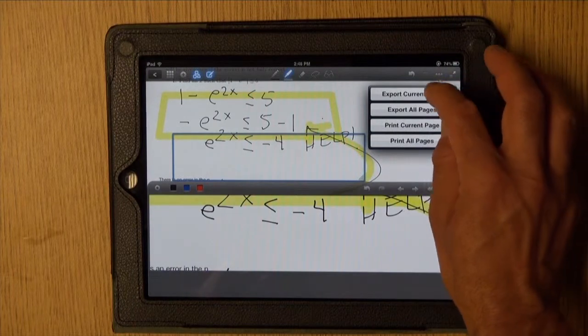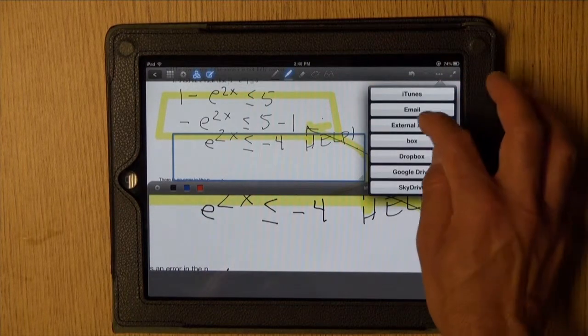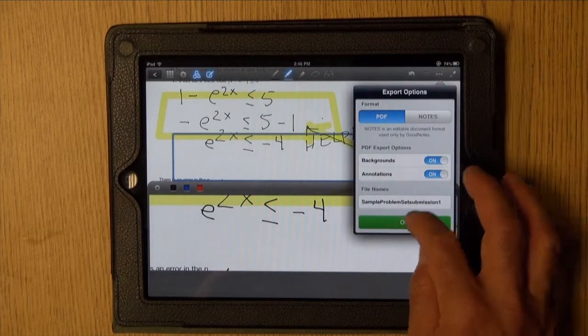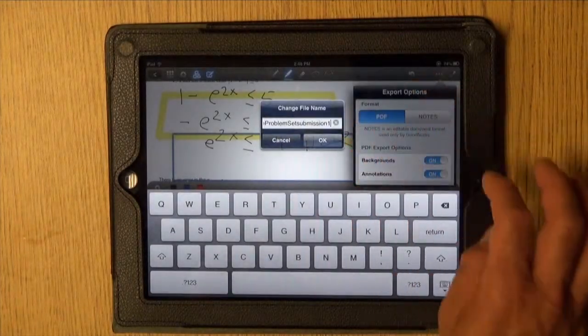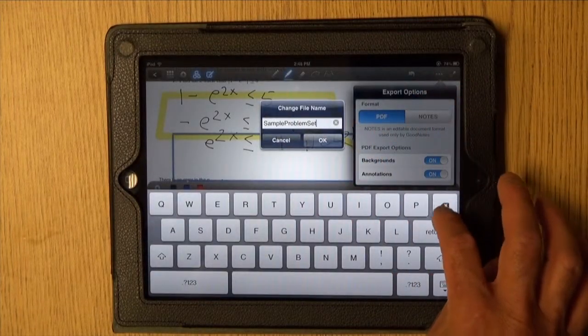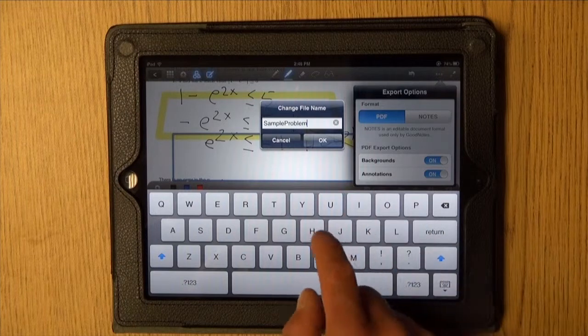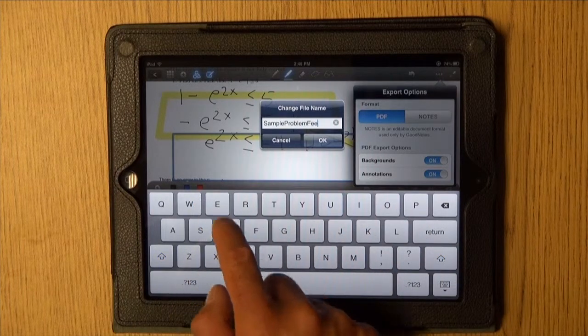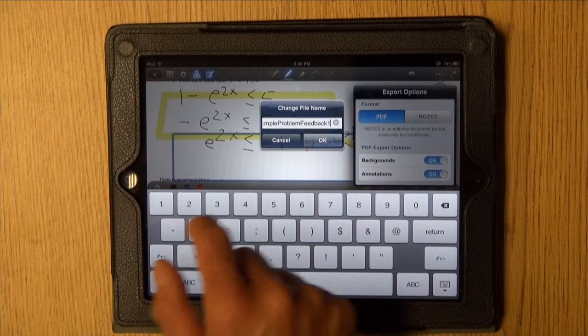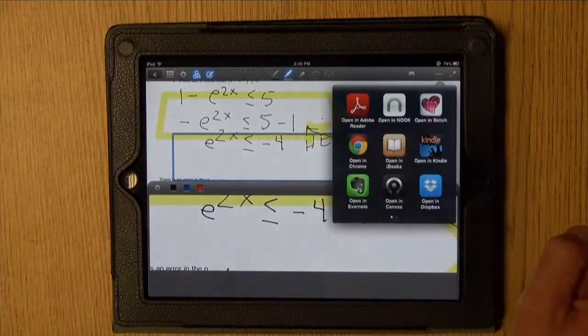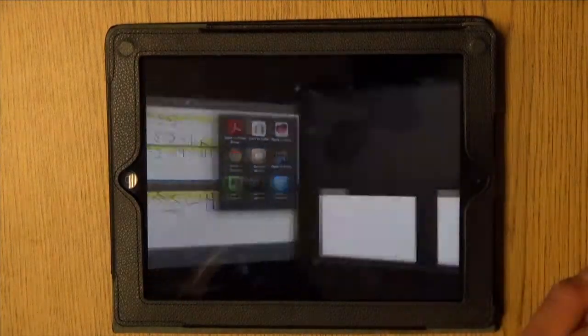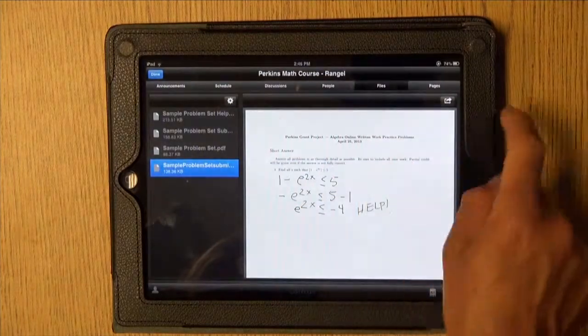We go ahead and export it the same way the student did, the current page, to external apps. I might also rename this as, let's just say, feedback one. Export it to Canvas again. File is received.